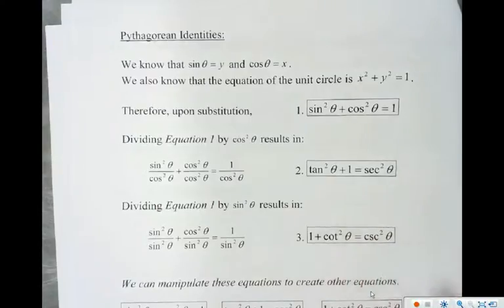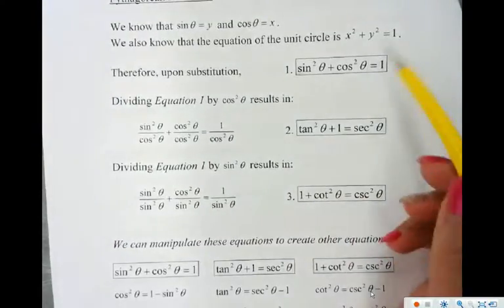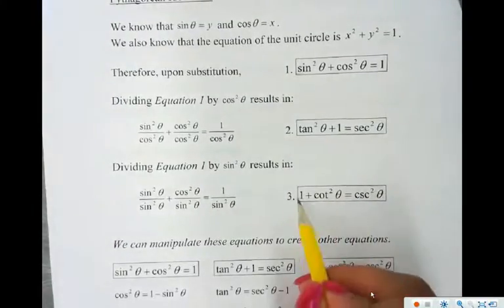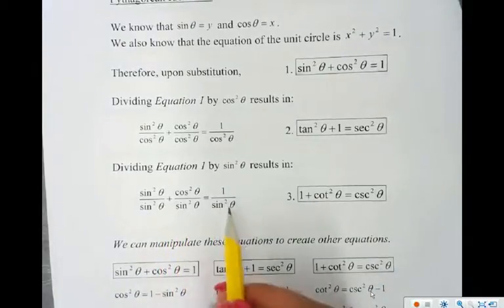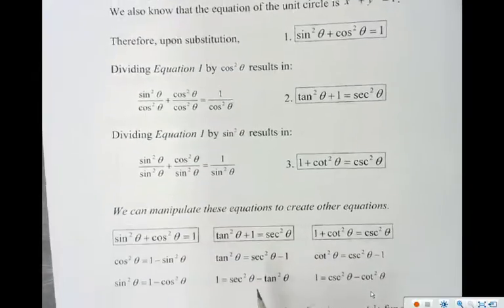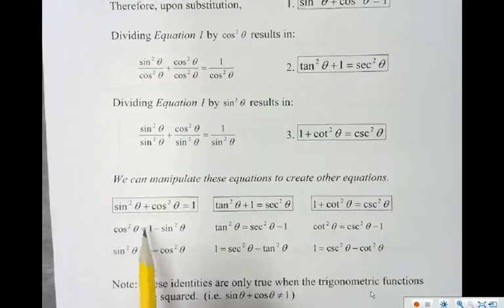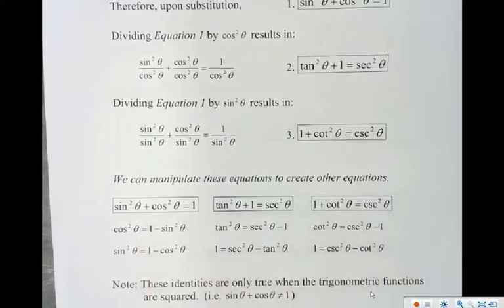Now if I divide equation 1 by sine, I end up getting this which is 1, cotangent, and then cosecant squared. And then you can manipulate these to get all these other variations of identities as well.